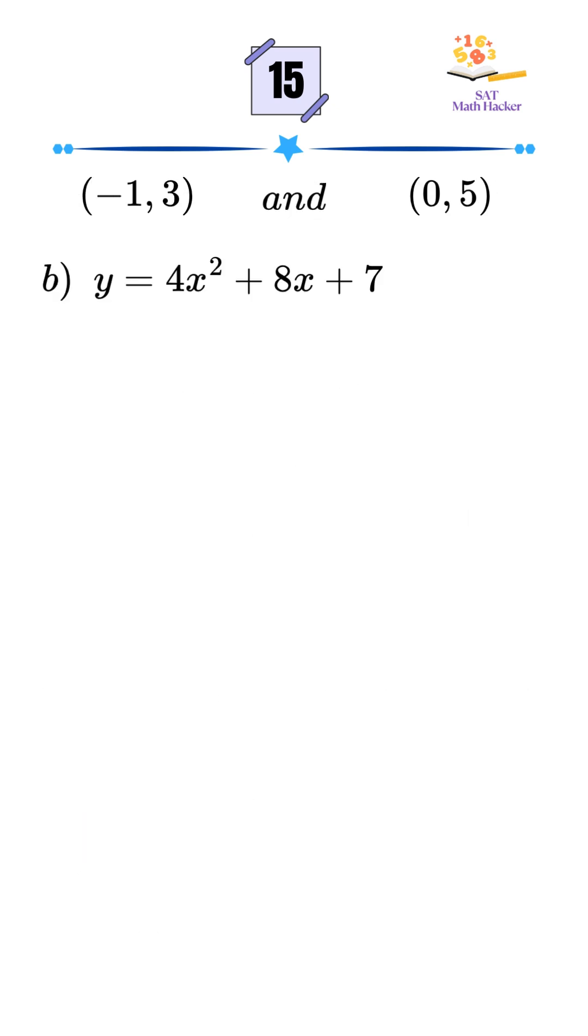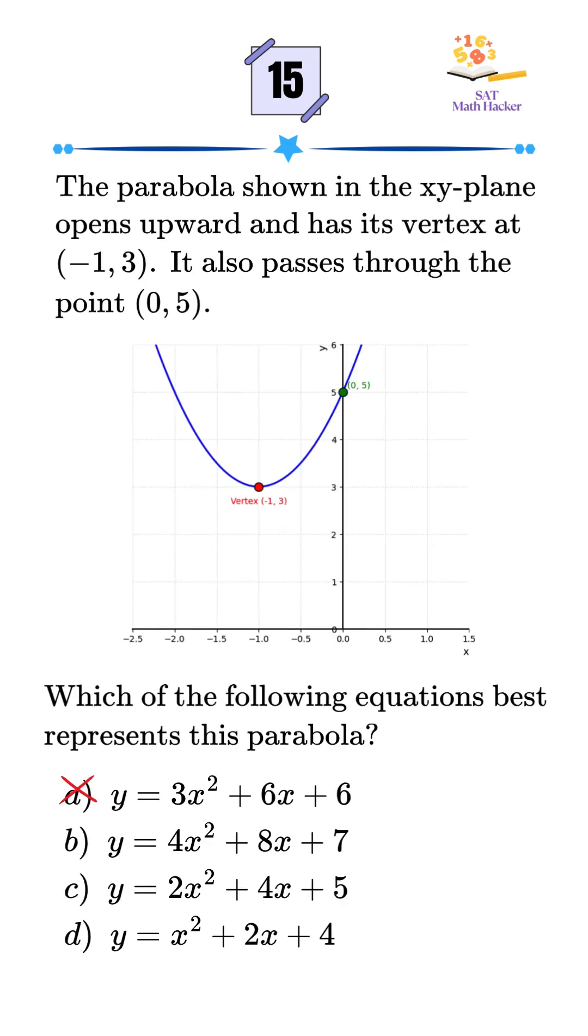Let's try option B. At x equals negative 1, we get y equals 3. Still true. Now check x equals 0. It gives y equals 7, but we want y equals 5. Still wrong.